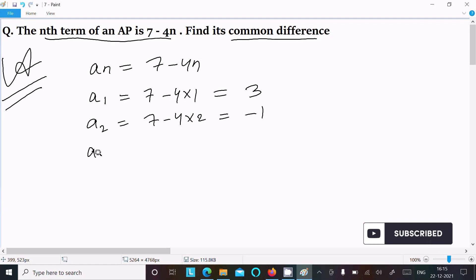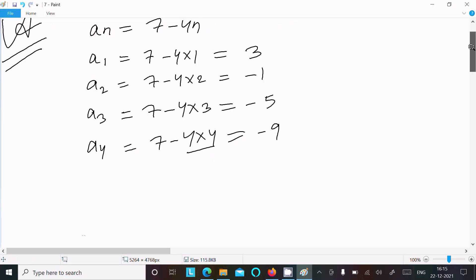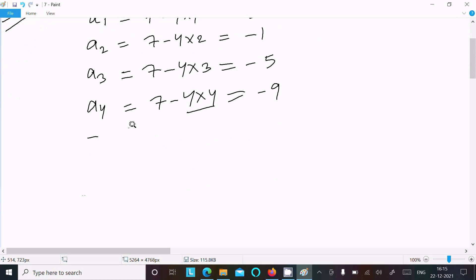Now third term, that is 7 minus 4 into 3. So 4 into 3 is 12, 12 minus 7, that comes minus 5. Like that, fourth term is 7, 4 into 4, the value comes 16. 16 minus 7, that comes here minus 9. Like that, here let's give dot dot dot.